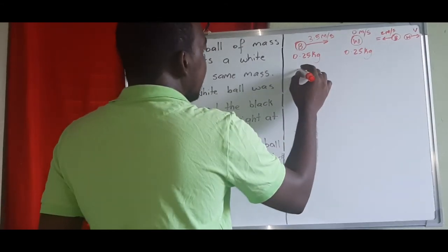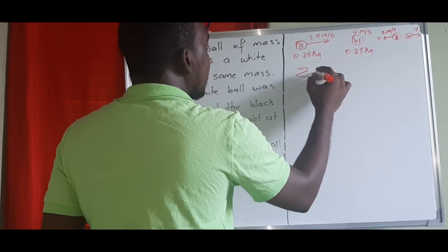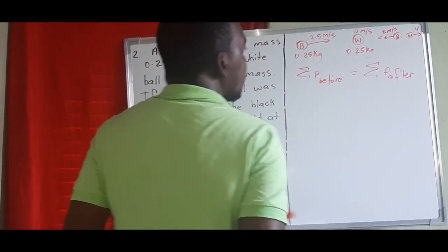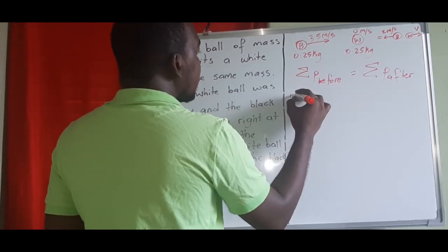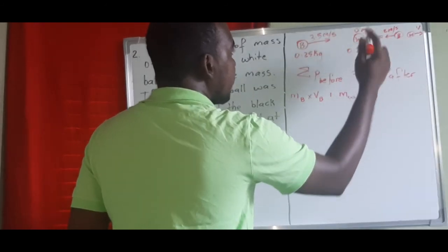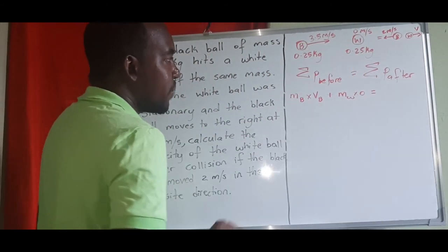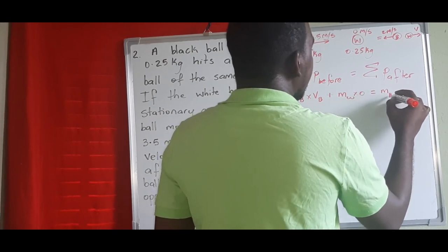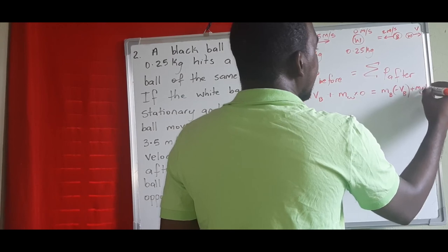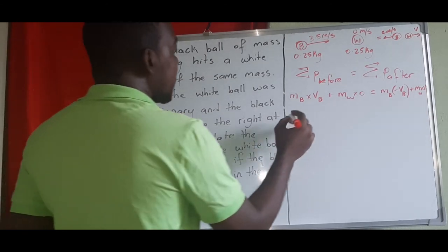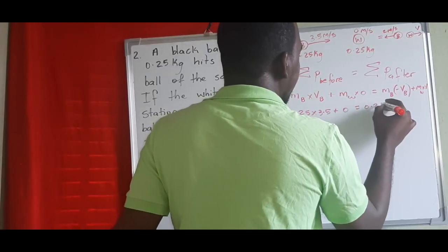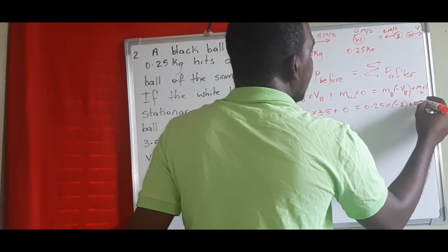Total momentum before equals total momentum after. Before: mass of black ball times its velocity (going right, positive), plus mass of white ball times zero (stationary). After: mass of black ball times its velocity (now going left, so negative), plus mass of white ball times v. Substituting: 0.25 times 3.5 plus 0 equals 0.25 times negative 2, plus 0.25v.